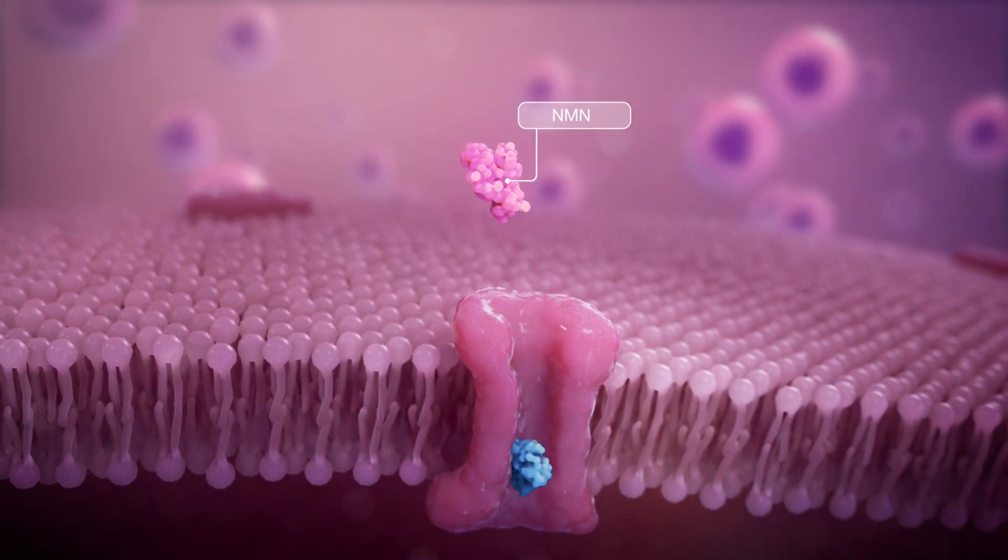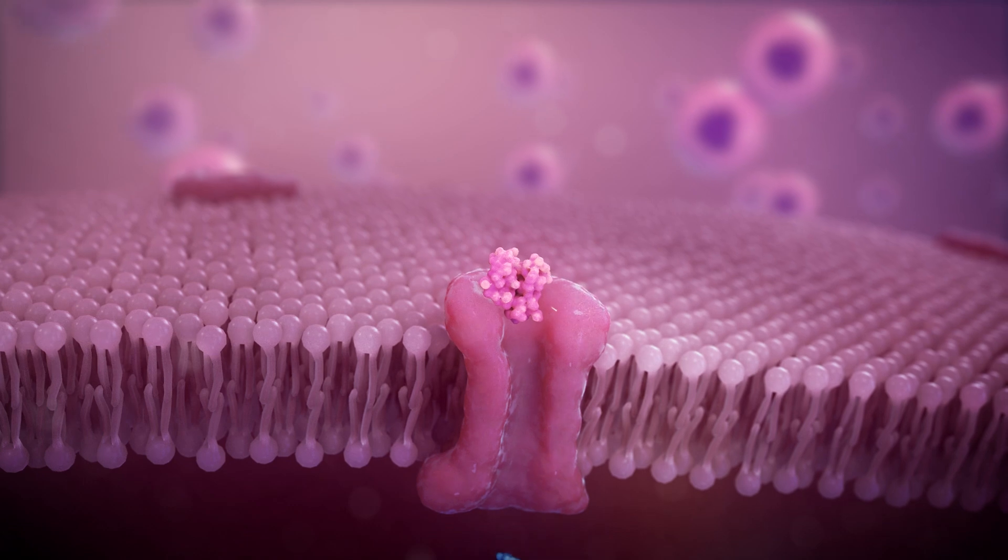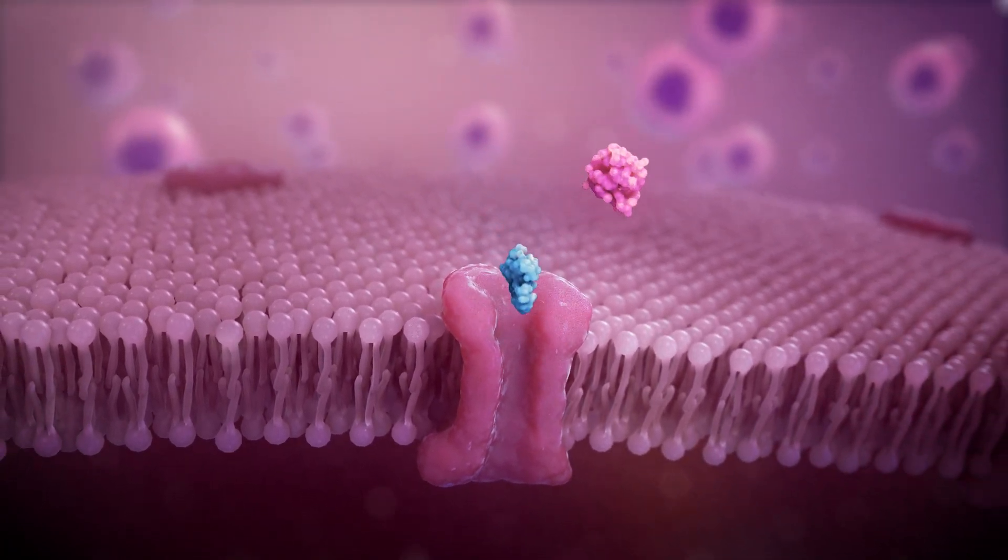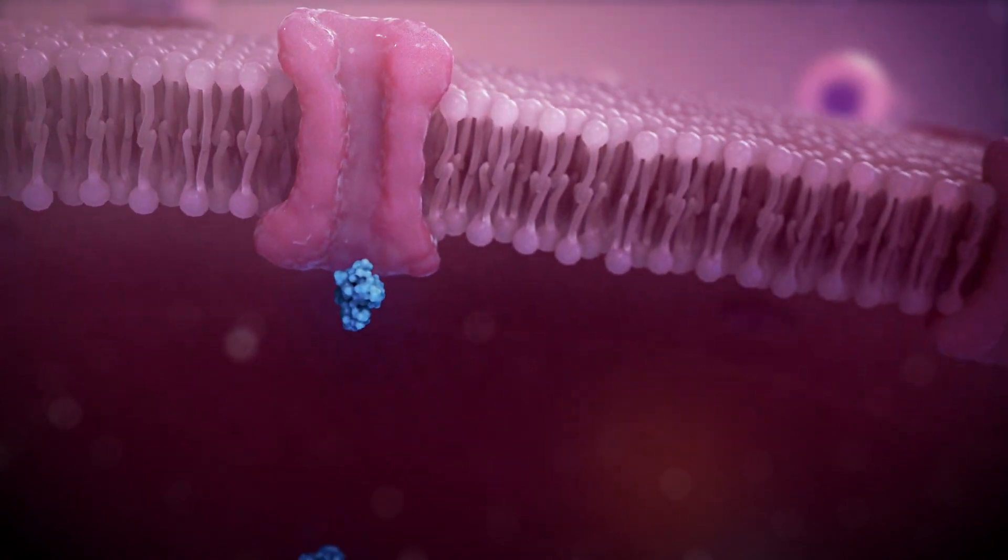NR can pass through cell membranes, while NMN cannot. And NR requires only two enzymatic steps to create NAD, while other precursors involve several steps.